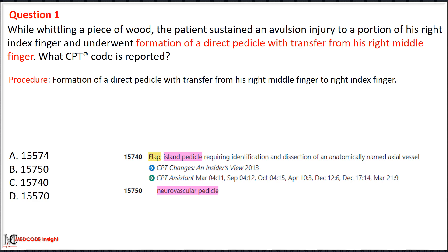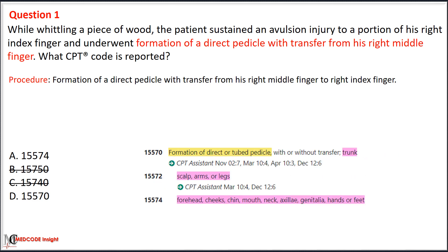First, we eliminate options B and C, which are used for island pedicle flaps. Code selection is based on location; both options A and D are used for direct pedicle flaps. The difference lies in their locations: code 15570 is for the trunk, while code 15574 is for the forehead, cheek, chin, mouth, neck, axillae, genitalia, hands, or feet. Since code 15574 describes a direct pedicle flap with or without transfer, our correct answer is option A: 15574.